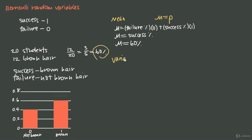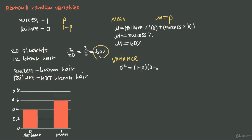For the variance of a Bernoulli random variable, we call it sigma squared. We set it equal to the probability of failure times the squared distance of failure from the mean, plus the probability of success times the squared distance of success from the mean. If the percentage of success is p, then the percentage of failure is 1 minus p, because probabilities must sum to 1. So the variance formula starts as: sigma squared equals (1−p) times (0−p)² plus p times (1−p)².